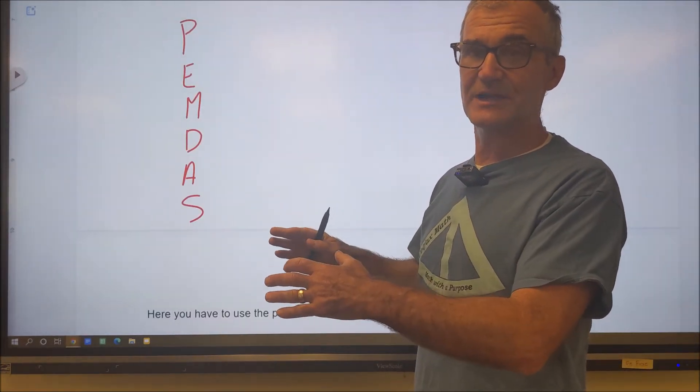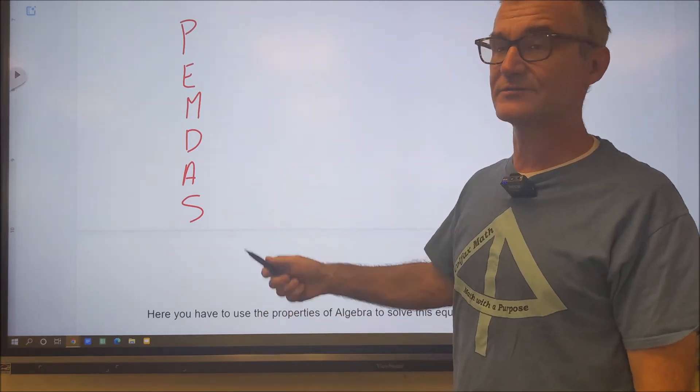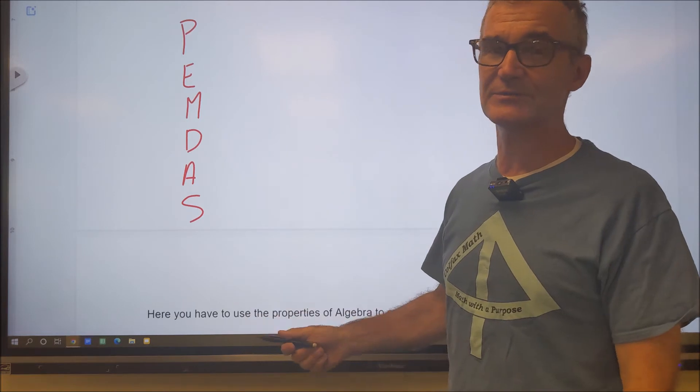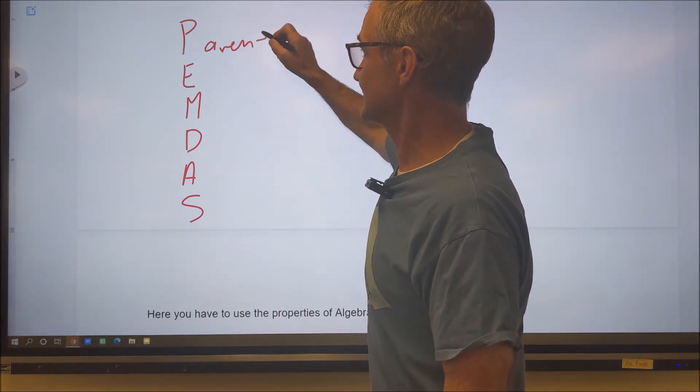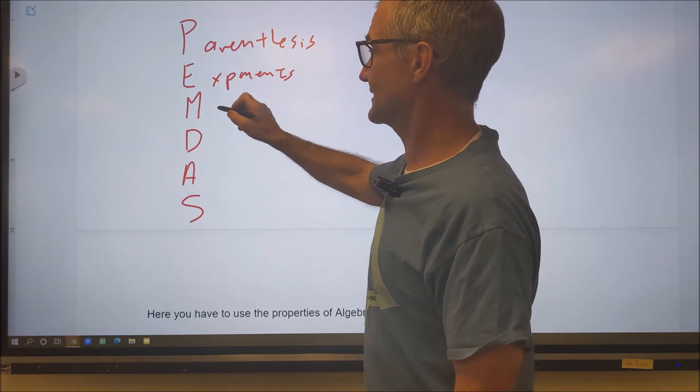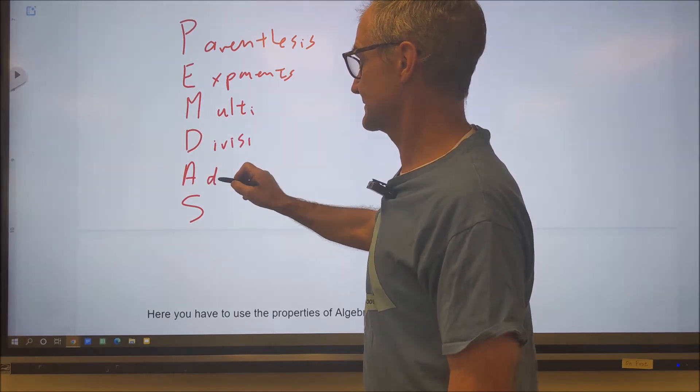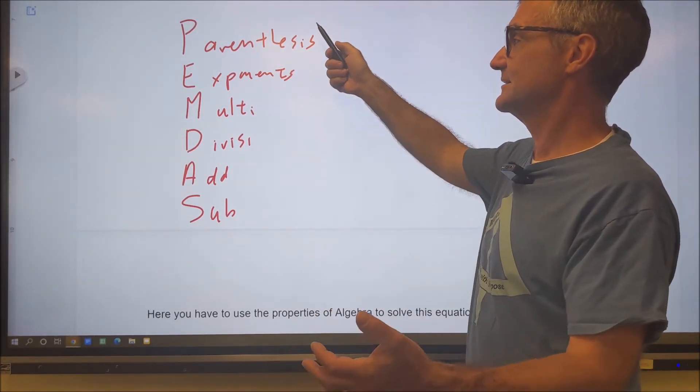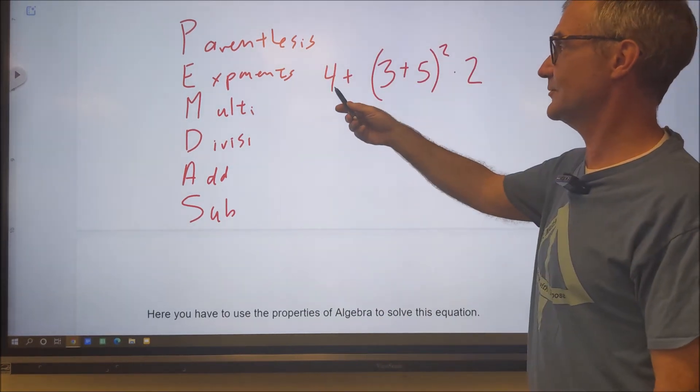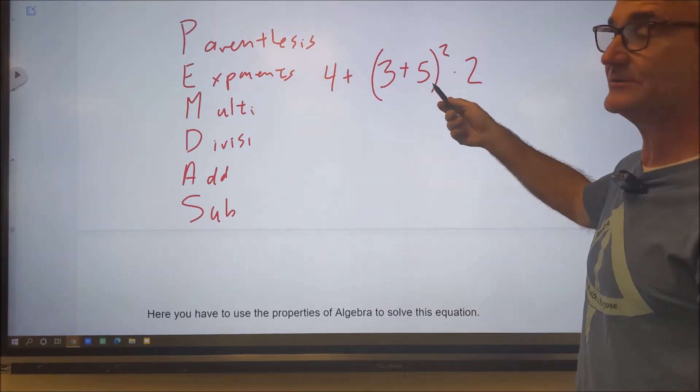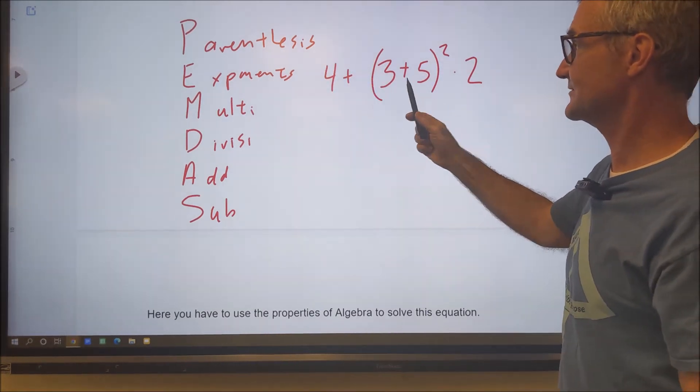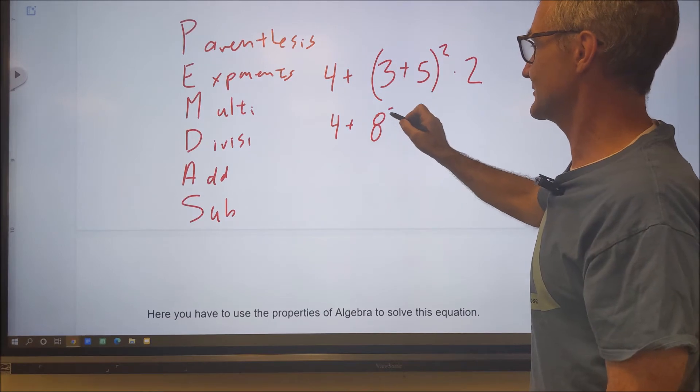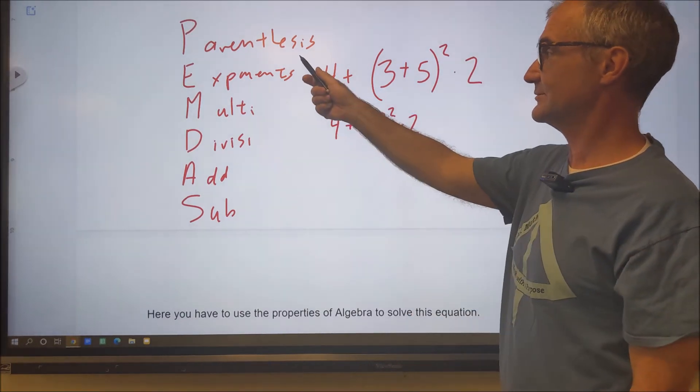Before we get started on some of the operations in algebra and the properties of algebra, let me just review order of operations. Some people use this mnemonic device PEMDAS. Please excuse my dear Aunt Sally. What it means is you always do parentheses first, then you do exponents, then multiplication, then division, addition, subtraction. So that's the order of operations. Here's an example right here. Let's say I have 4 plus the quantity 3 plus 5 to the power of 2 times 2. First thing I have to do are my parentheses.